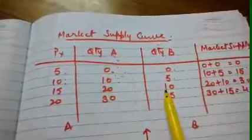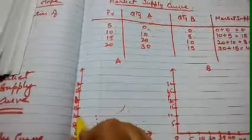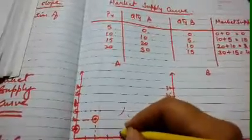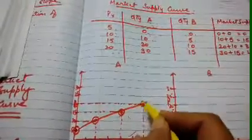We will be plotting first for Firm A. When the price was rupees 5, quantity supplied was 0, so we are standing here. At price rupees 10, quantity supplied is 10. At price 15, quantity supplied is 20 units. At price 20, quantity supplied is 30 units. When we join these points, this is the supply schedule of Firm A.